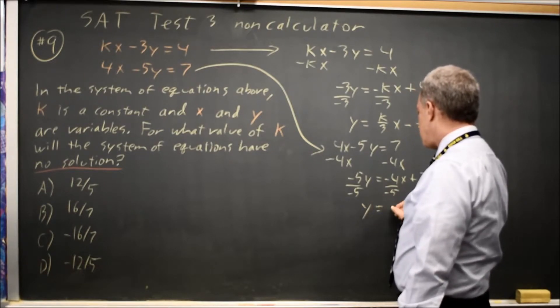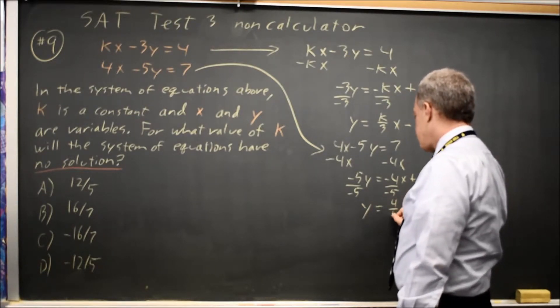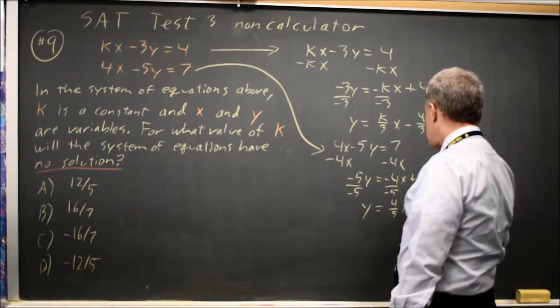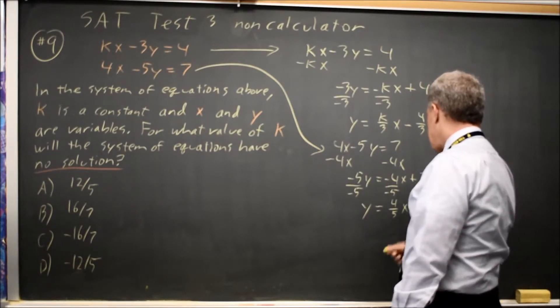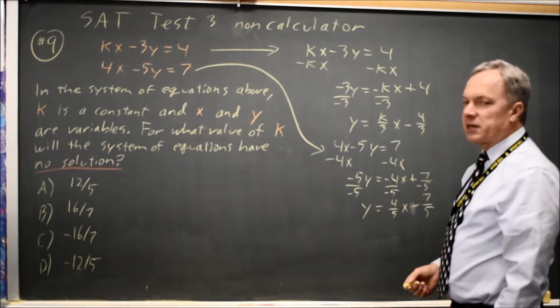y equals negative 4 over negative 5 is positive 4 fifths x plus 7 fifths. I forgot to divide 7 by negative 5. That's negative 7 fifths. And as I said, these have no solution if the slopes are the same.